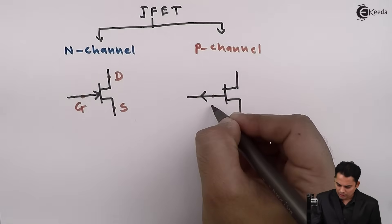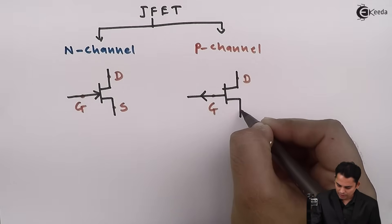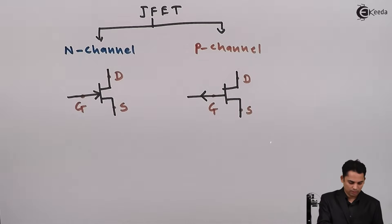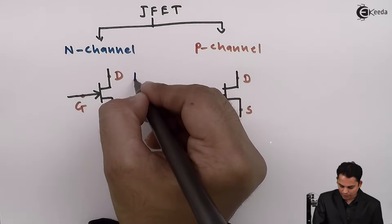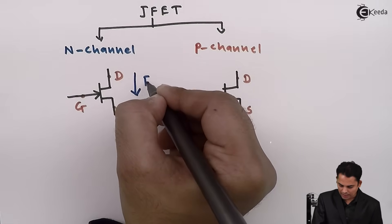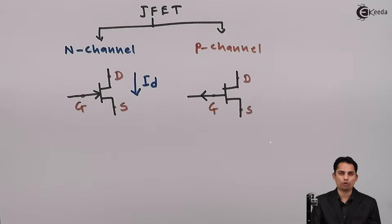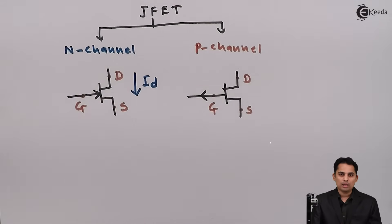In JFET, all three terminals are gate, drain, and source. Current will always flow from drain to source, marked as drain current ID, whereas electrons will always flow from source to drain.